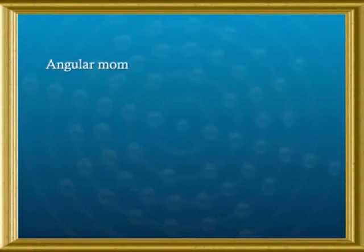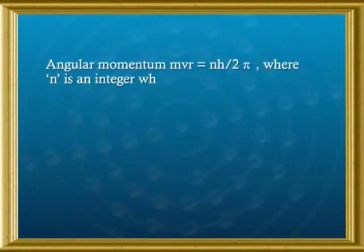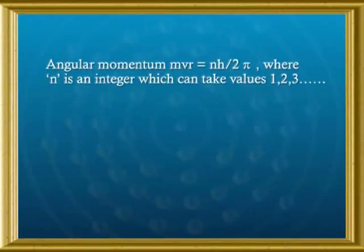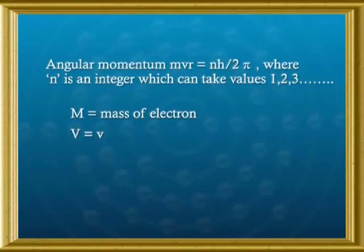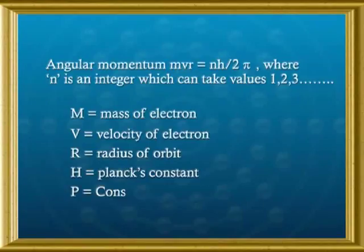The angular momentum of an electron revolving in a stationary orbit is quantized. This means the angular momentum of a revolving electron is an integral multiple of h/2π. Mathematically: mvr = nh/2π, where n is an integer (1, 2, 3…), m is the mass of the electron, v is the velocity of the electron, r is the radius of the orbit, h is Planck's constant, and π is approximately 22/7 or 3.14.